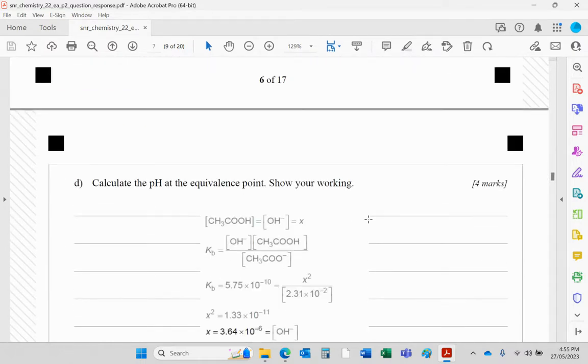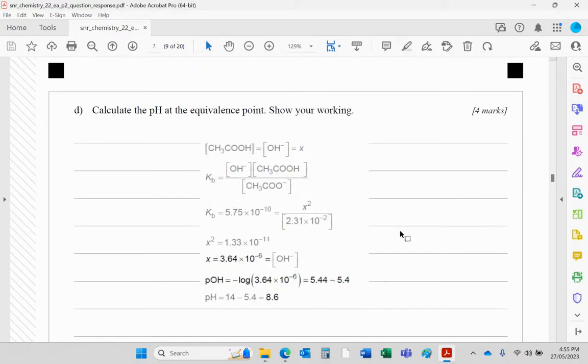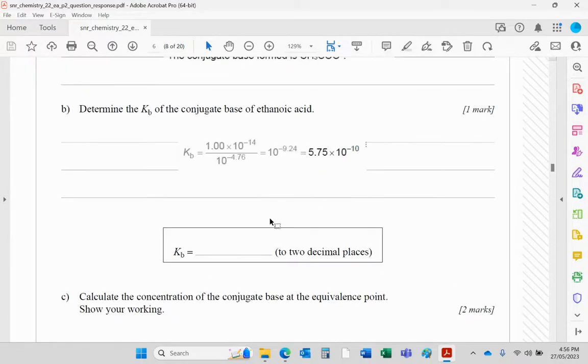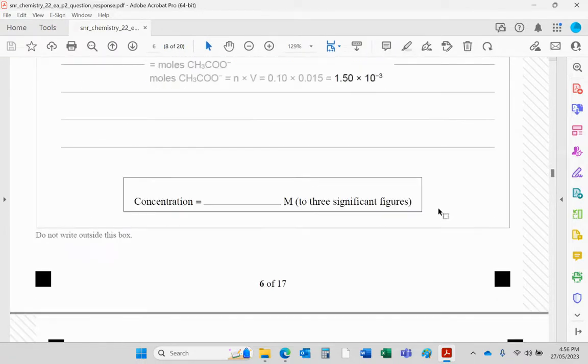The pH of the equivalence point is then worked out there. It's quite a bit of working here for four marks. So effectively, what have we got? We've got Kb is equal to the OH minus times the CH3COOH over that there, over the anion. Kb is then given to you—or we worked it out, didn't we? 5.75 times 10 to the minus 10.